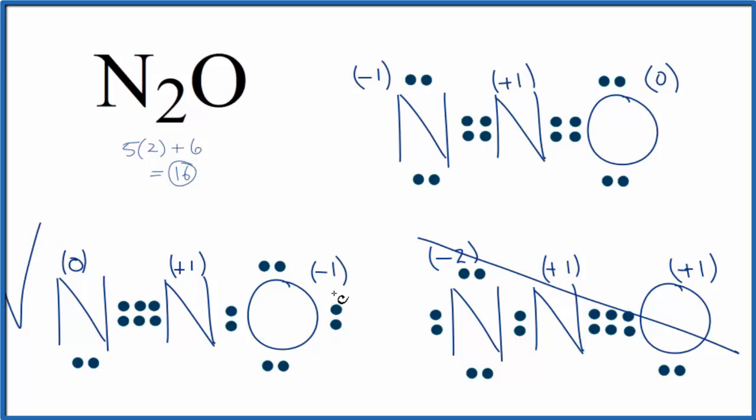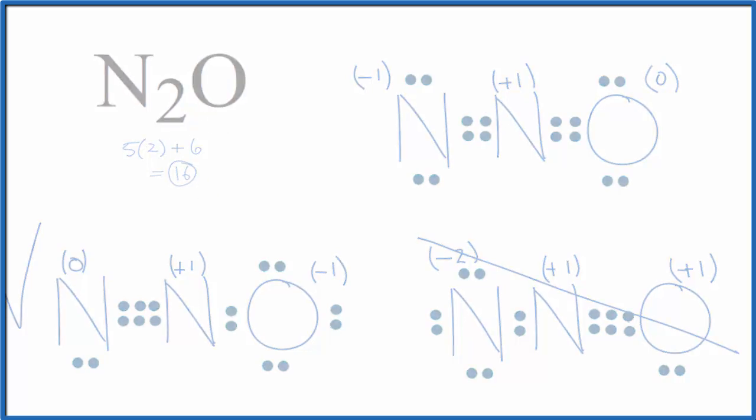This is Dr. B with the Lewis structure for N2O, nitrous oxide, also called dinitrogen monoxide. Thanks for watching.